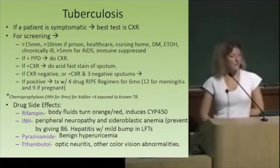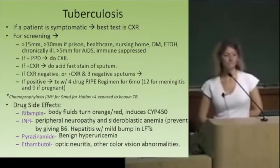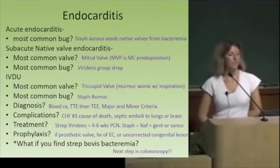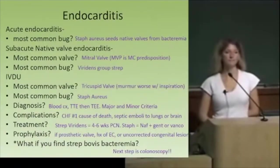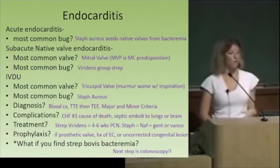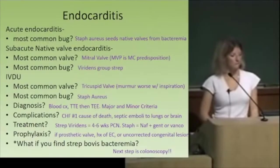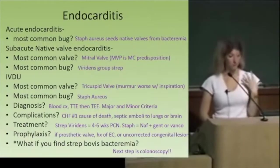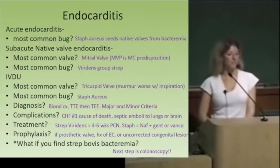Endocarditis: acute endocarditis attacking native valves is most commonly staph aureus. Subacute on native valves, the most common bug is viridans group strep, and the most commonly affected valve is the mitral valve.